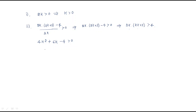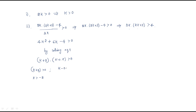Solving the quadratic 4k² + 6k − 4 > 0, we get two roots: (k + 2) and (k − 0.5). So the conditions are k + 2 > 0, giving k > −2, and k − 0.5 > 0, giving k > 0.5.